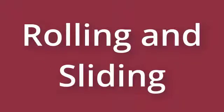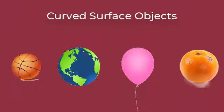Do you know what is rolling and sliding? Let's see. When an object does not have sides and corners, they are curved surface objects or round surface objects. Such objects can roll.